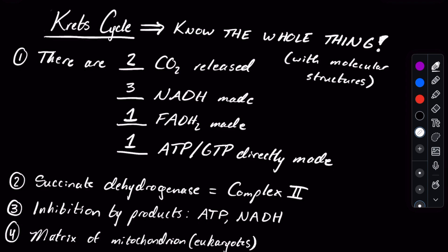Finally, knowing where the Krebs cycle occurs in the cell is very high yield. Know that it occurs in the matrix of the mitochondrion in eukaryotes, and — perhaps a little lower yield — it occurs in the cytosol in prokaryotes. And that's it.